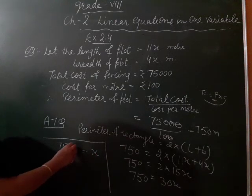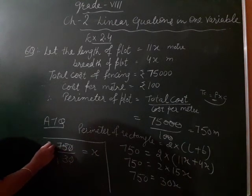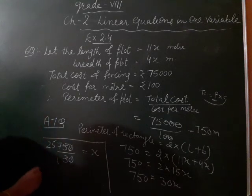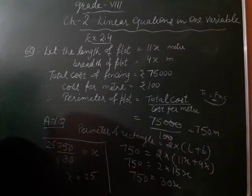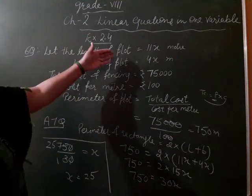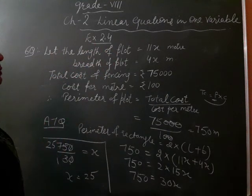What is the value? Zero se zero kategi. 3 ones are 3, 3 twos are 6, 3 fives are 15. So, x ki value kya hogi? 25. When x ki value is 25, what is our length? So, our length kya ban jayegi?